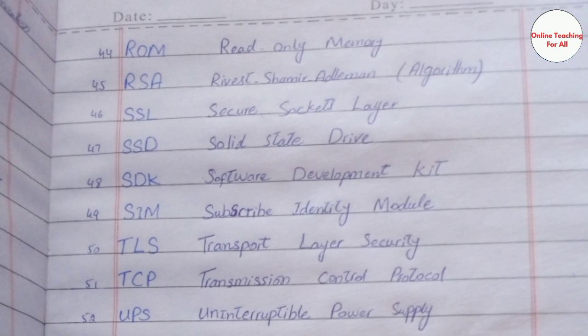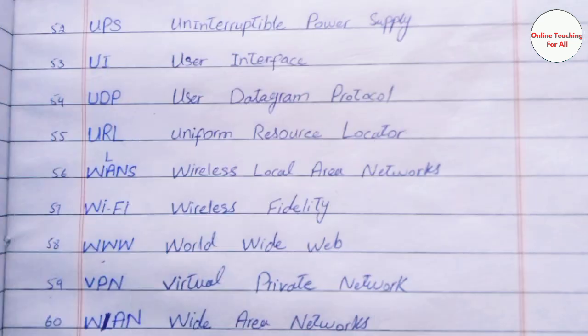UPS - Uninterruptible Power Supply. UI - User Interface. UDP - User Datagram Protocol. URL - Uniform Resource Locator. WLAN - Wireless Local Area Network. Wi-Fi - Wireless Fidelity.